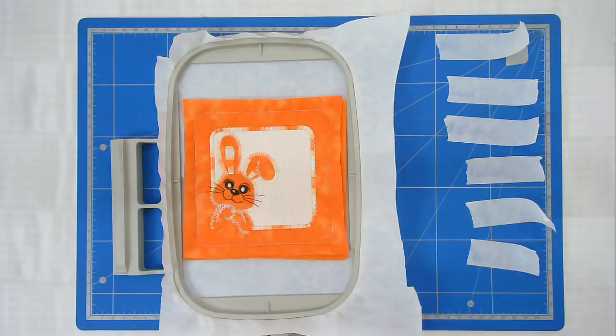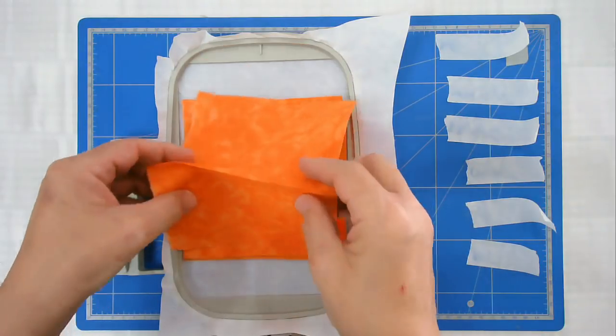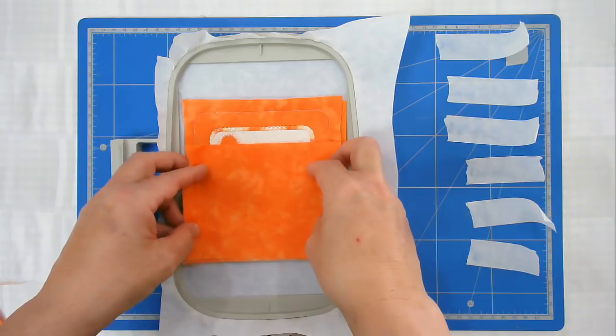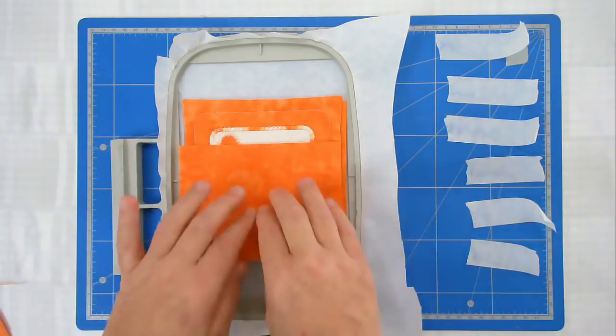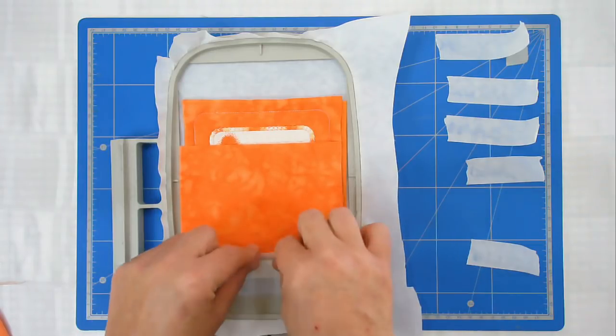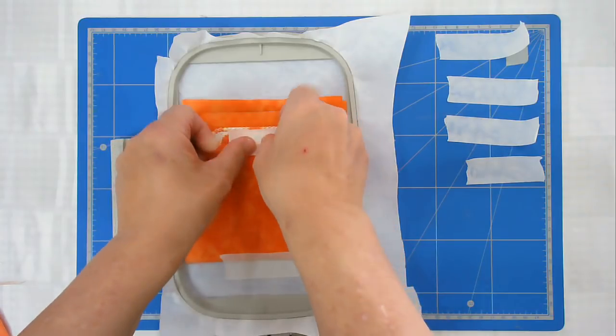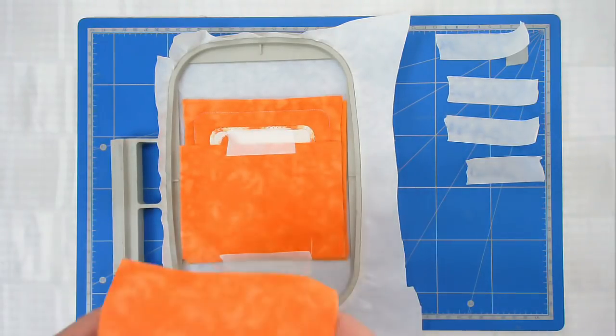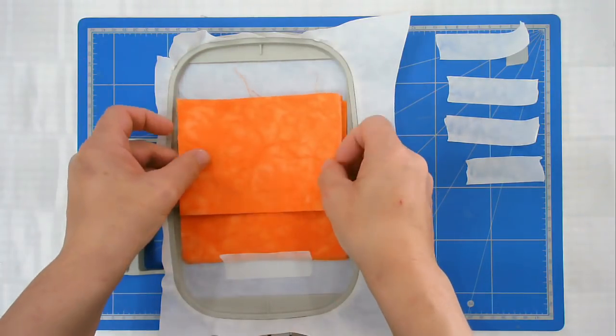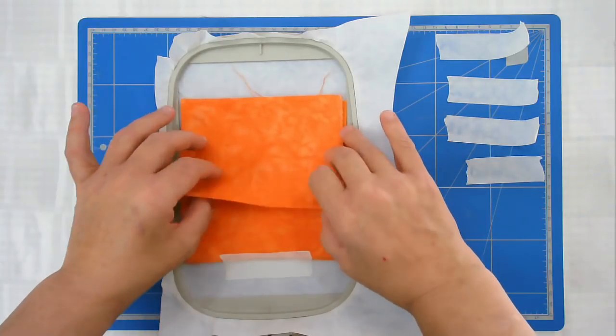So next we're going to add our backing fabrics to the front and I've got my 8x6 pieces folded and pressed in half. I'm going to line the bottom one up with the outside edge of the fabric and I'm going to tape it in place. And I'm going to tape this piece down here just so that it can't move. And I'm now going to tape my second piece with the fold obviously pointing towards the middle and line that up with the outside edge of the front.